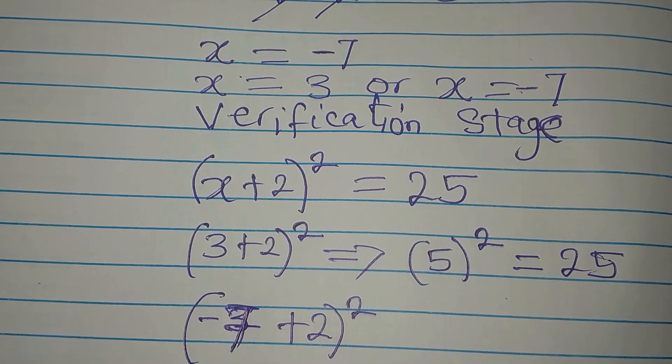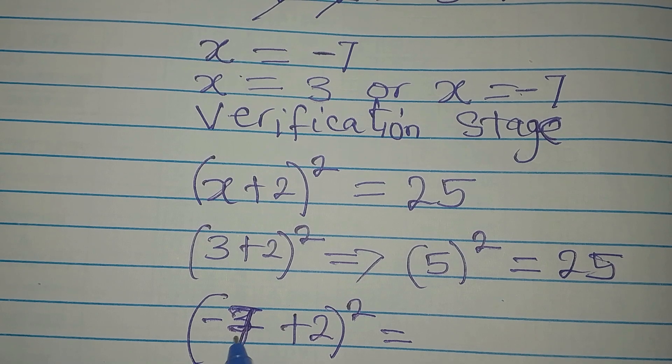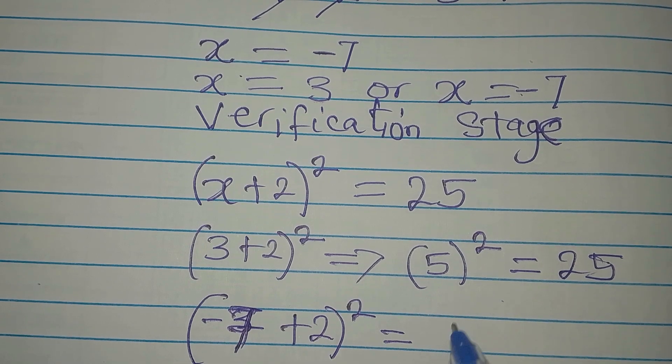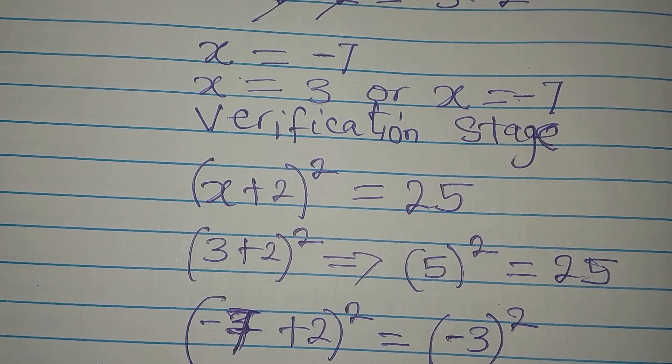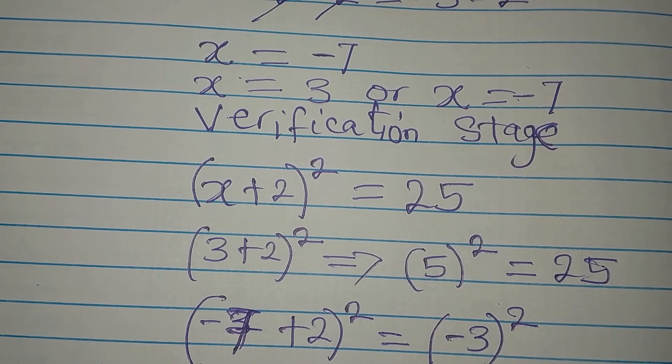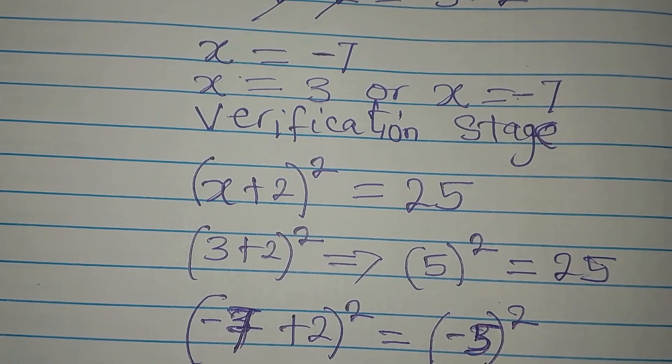Will this give 25? The answer is yes. Because minus 7 plus 2 is minus 5 to the power of 2. Minus 5 is minus 5. So it's minus 5 to the power of 2.